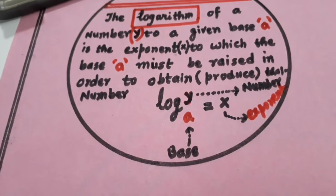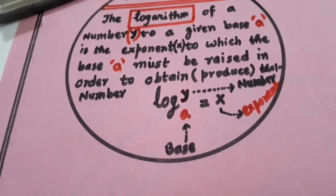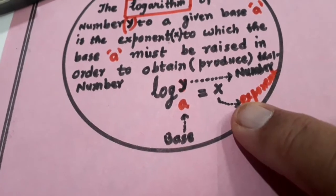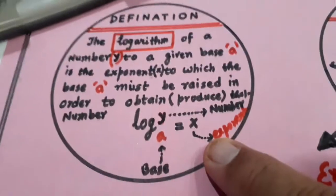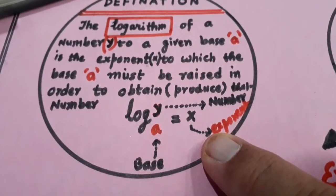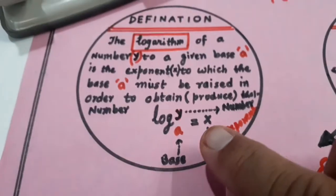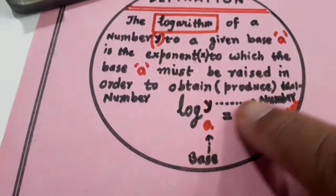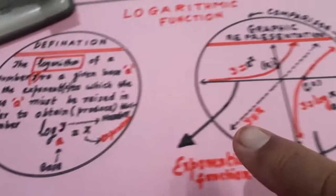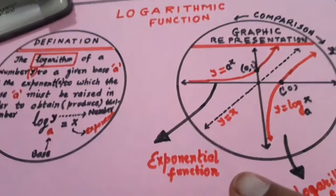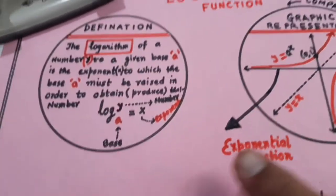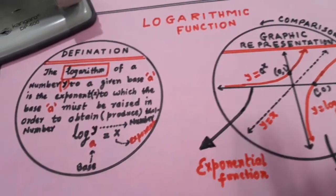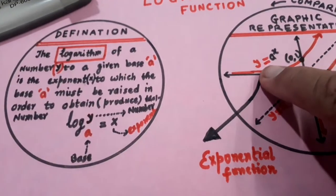Is equal to the exponent. X jo hai exponent hai. If we write this in exponential form, I told you the 7 shape is formed: a raised to power x is equal to y. A raised to power x is equal to y. So this shape is formed, look here, a raised to power x is equal to y.